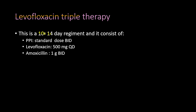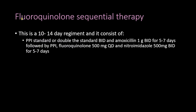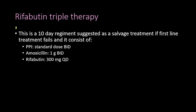The levofloxacin triple therapy is a 10-to-14-day regimen consisting of a proton pump inhibitor, amoxicillin, and levofloxacin 500 mg once a day. The fluoroquinolone sequential therapy begins with a proton pump inhibitor and amoxicillin for five to seven days, followed by a proton pump inhibitor, a fluoroquinolone such as levofloxacin 500 mg once a day, and a nitroimidazole for five to seven days.